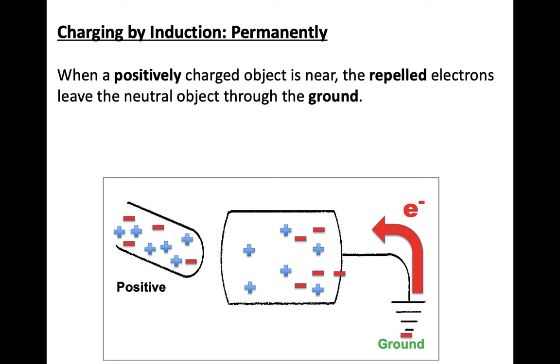So this animation is incorrect, just the way that the electrons are moving. When you have something that is positive coming towards the neutral object, you want to counteract those positives so the electrons actually come up, not go down.